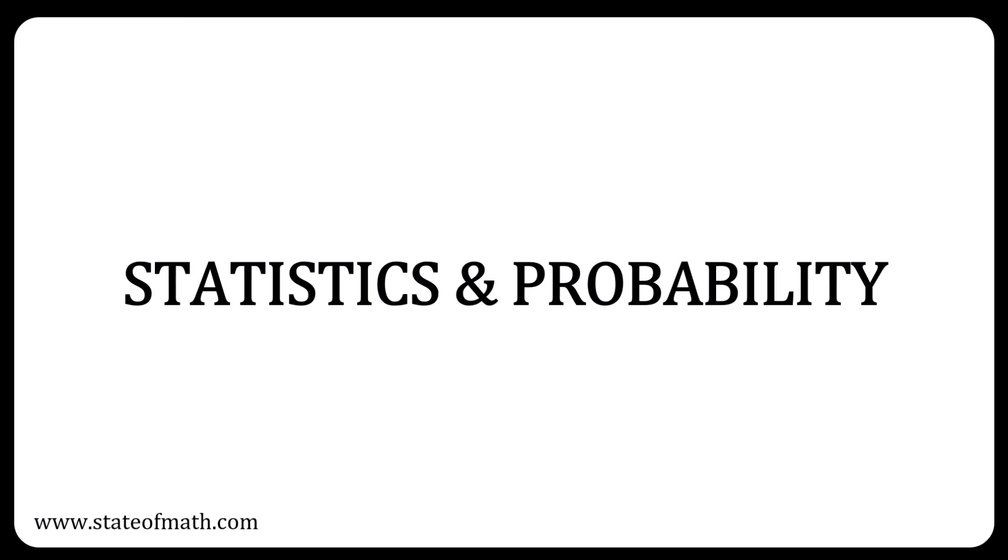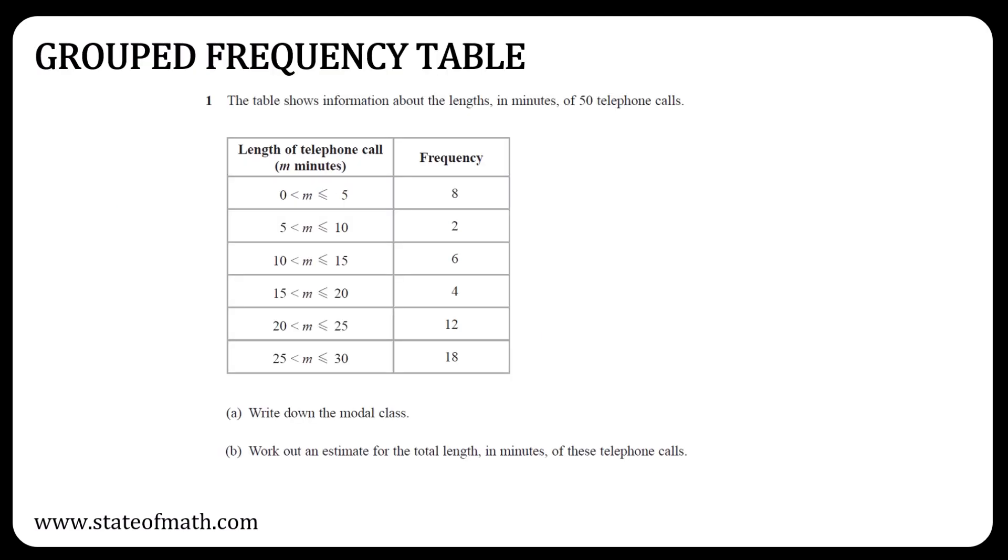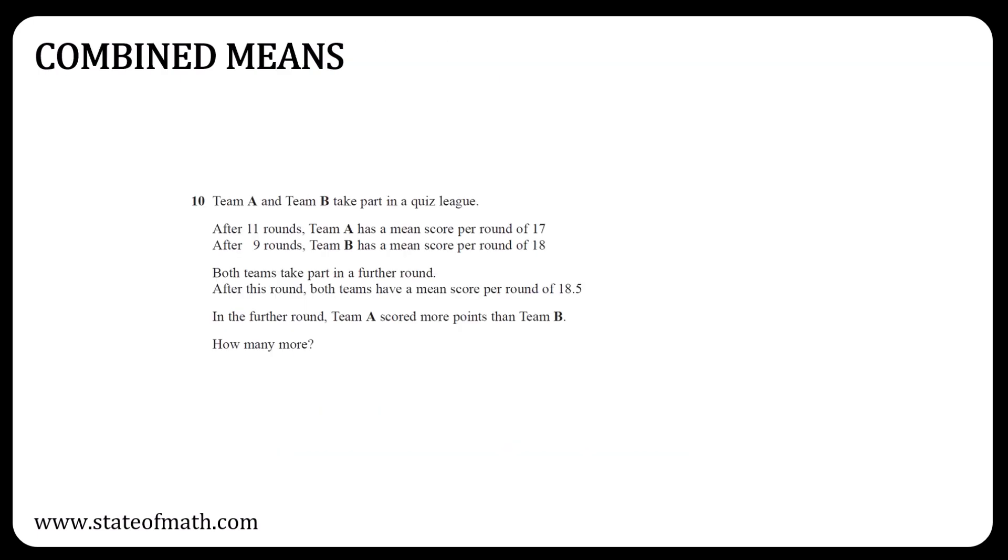Moving on to statistics and probability. Histograms is a topic I was missing from Paper 1 HR, so include it in your revision. A grouped frequency table is a must-revise topic. It usually appears in one of the two papers, and since it was missing from 1 HR, it is a strong candidate for Paper 2 HR. If they decide to skip the grouped frequency table question, another type of question like this combined means question will probably take its place. That is, unless they decide to include both.